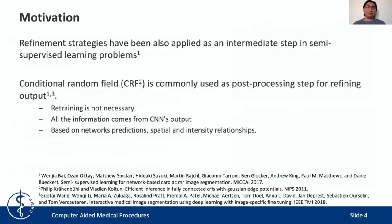Segmentation refinement has also been applied as an intermediate step in some supervised learning problems. One common algorithm used for refining segmentation is conditional random fields, or CRF. Some characteristics of this algorithm are that retraining the network is not necessary, all the information required to refine segmentation comes from the CNN output itself, and it is usual to build this refinement model using the network prediction, the spatial and the intensity relationship.